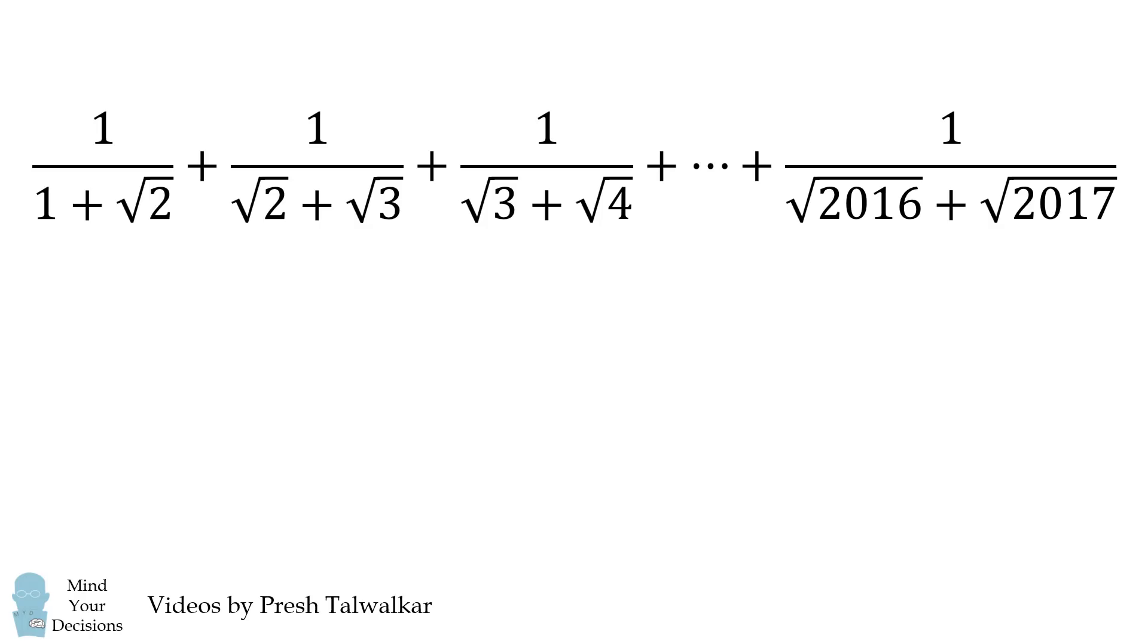The first term is 1 all over 1 plus the square root of 2. The next term is 1 over the quantity square root of 2 plus square root of 3. The next term is 1 over the square root of 3 plus the square root of 4, and this continues until we have 1 over the square root of 2016 plus the square root of 2017.